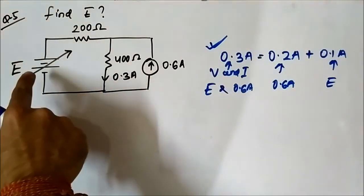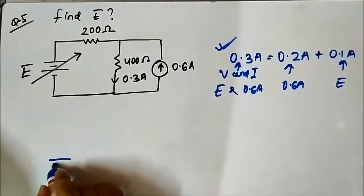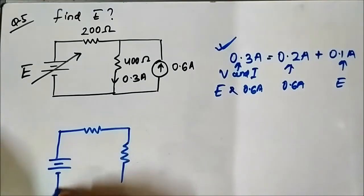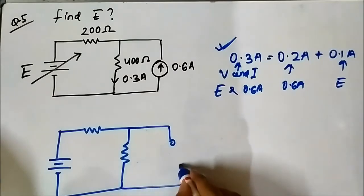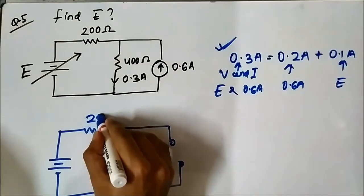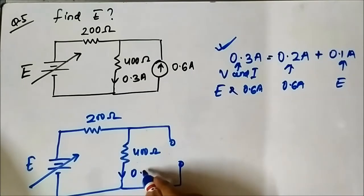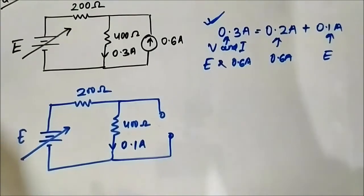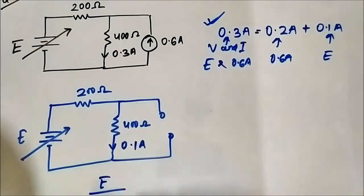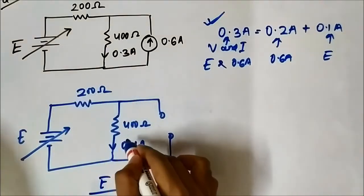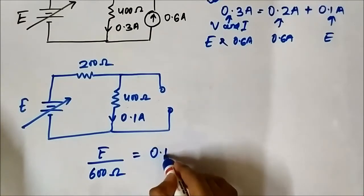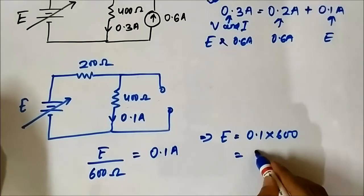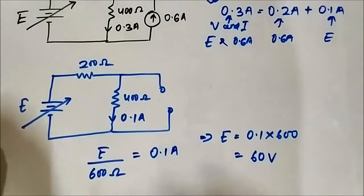In step two, we consider only the voltage source E and open circuit the current source. From the previous analysis, we know the current through the 400 ohm resistor in this step is 0.1 ampere. We know the resistance values and the current, so we just need to determine E. The voltage source E divided by the total resistance of 600 ohm (200 plus 400 ohm) equals 0.1 ampere, which gives E equals 0.1 times 600, which equals 60 volts.